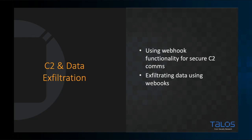Now we shift over to C2 and data exfiltration — I find this to be the most interesting topic regarding this type of abuse. Utilizing the webhook functionality, a malware operator can implement a fairly robust C2 infrastructure operated and managed almost entirely through Discord or Slack. Not only can initial beacons and information about the infected host be sent back to the attacker, this method can also be used for data exfiltration of basically any data type. Some campaigns may just use these techniques for initial beaconing, and some may use them for their entire C2 infrastructure.